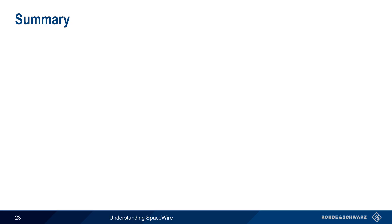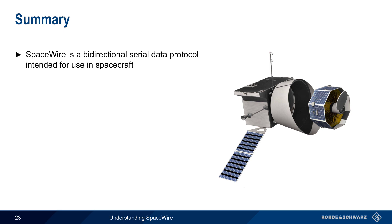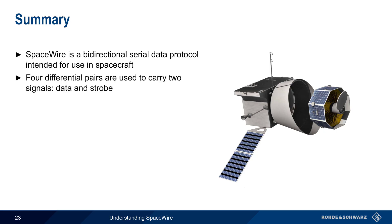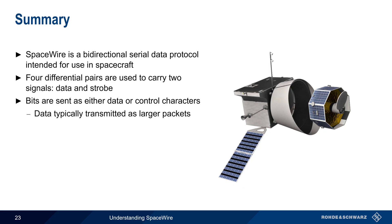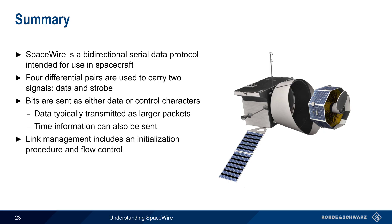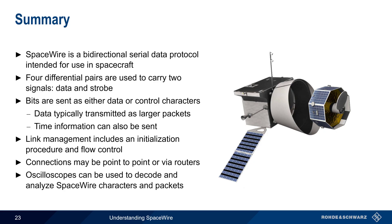SpaceWire is a bidirectional serial data protocol that was designed to meet the challenges of operating in space. Four differential wire pairs are used to carry two signals — data and strobe — in both directions. Bits are sent in the form of data or control characters, with data characters typically organized into larger packets. SpaceWire also supports the broadcasting of time information for synchronization. Links must be initialized and are continually monitored for errors. Flow control is used to ensure that incoming data does not overflow the receive buffers. Nodes are connected either point-to-point or via routers, and oscilloscopes can be used to decode and analyze SpaceWire characters and packets.